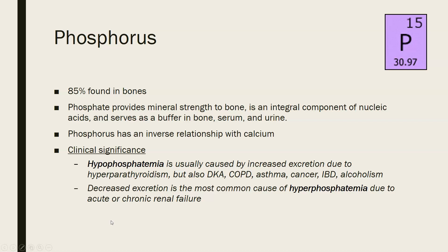Next is phosphorus — 85% is found in bones with calcium, providing mineral strength. It is an integral component of nucleic acids (DNA and RNA) and serves as a buffer in bone, serum, and urine, making it one of the important minor buffer systems. Phosphorus has an inverse relationship with calcium: when calcium goes up, phosphorus goes down, and vice versa.